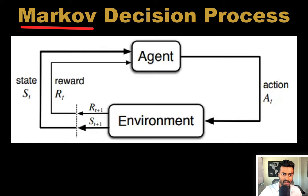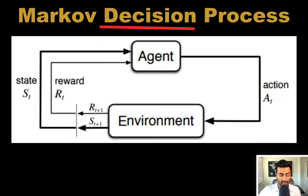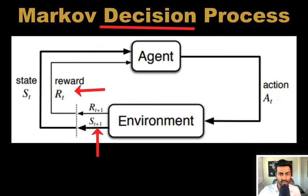It is Markov because the next state emitted by the environment only depends on the previous state and action — in other words, it's memoryless, and past states beyond the current state don't really influence the future state. The 'decision' in Markov decision process refers to the fact that we select an action based on the current state, and this leads to a state transition and the accumulation of rewards.